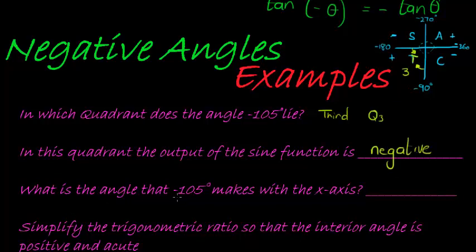What is the angle that negative 105 degrees makes with the x-axis? So if this was negative 105 degrees, what angle would it make with the x-axis? Well, if I wanted to get to negative 180, I'm going to have to subtract another 75 degrees. So this angle is 75 degrees.